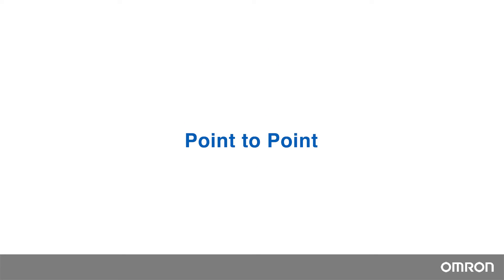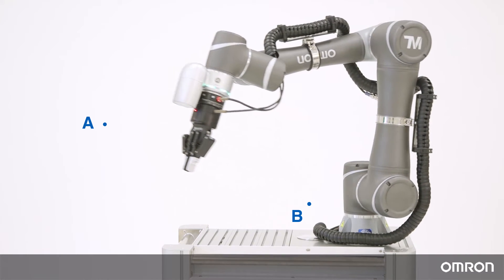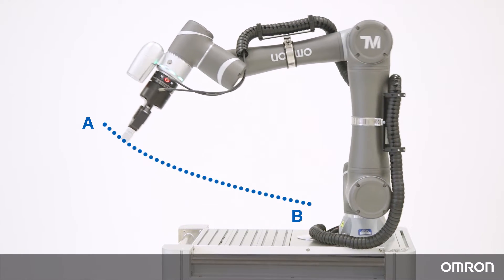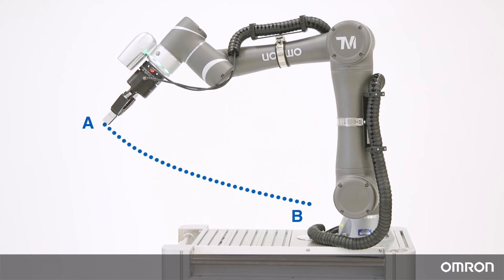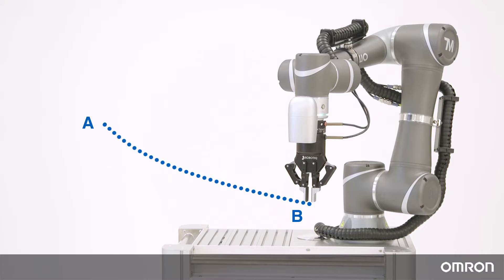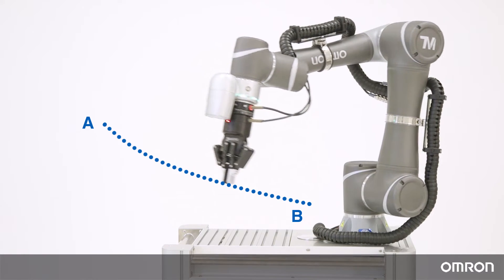First, let's dive into point-to-point motion. Point-to-point is the fastest way to get from point A to point B, meaning that you cannot designate the actual path the cobot will take. It is best to use point-to-point if there is no danger of colliding with objects that are within the path from point A to point B.